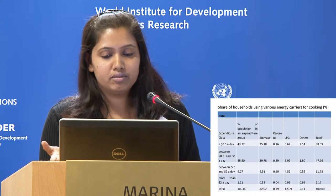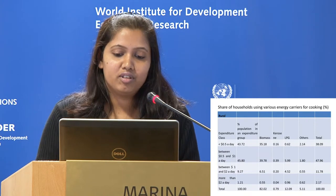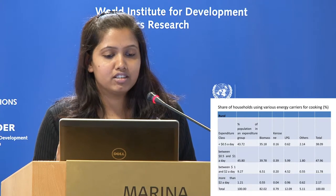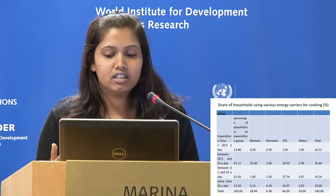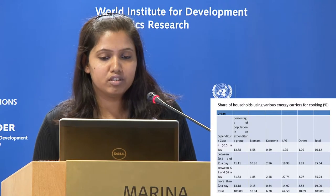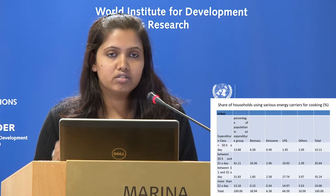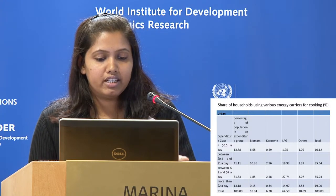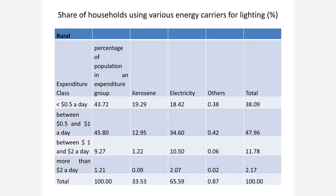We have seen that some people have shifted to LPG, though it is still very limited overall. In urban areas, 64% of people are now using LPG and have moved to cleaner fuel, but still 18% of urban households depend on biomass. For lighting, 65% of people are using electricity but 33% are still using kerosene as their primary fuel.